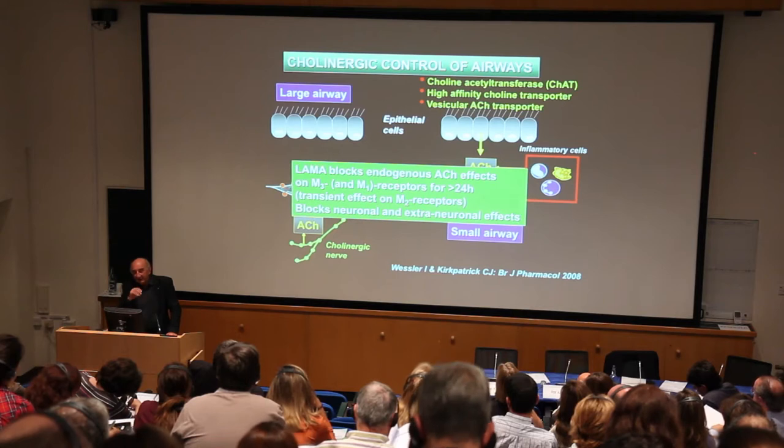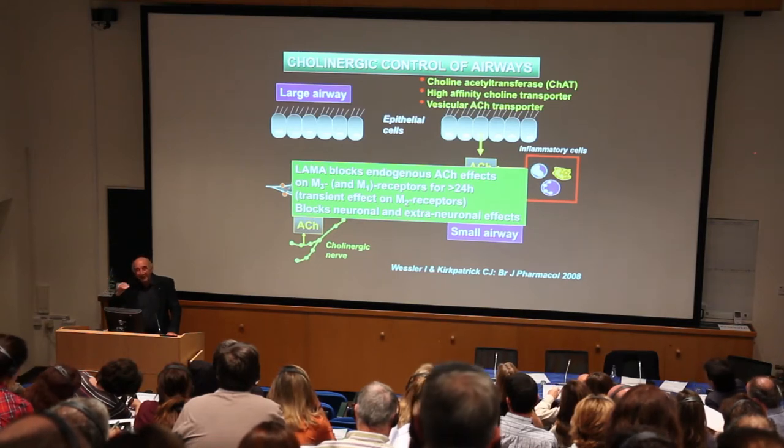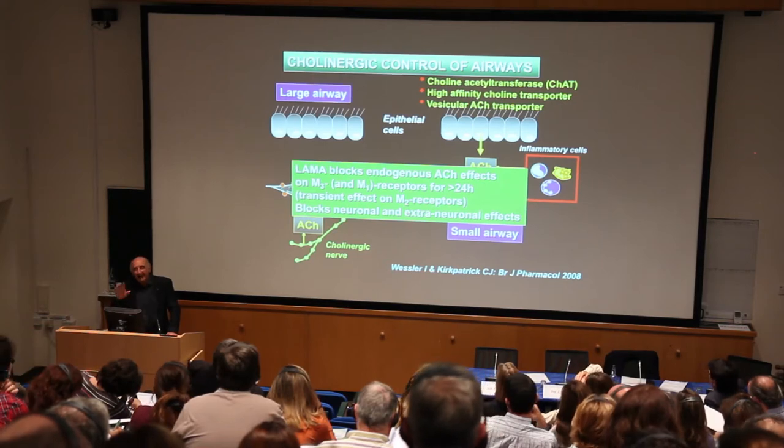When we give a LAMA, the only thing it can do is block endogenous acetylcholine — it has no other action. We think this is happening in large airways from blocking acetylcholine coming from nerves, and in small airways from blocking extra-neuronal sources.